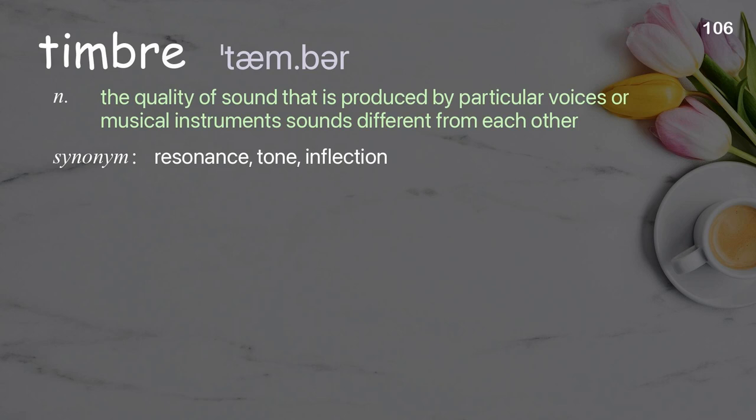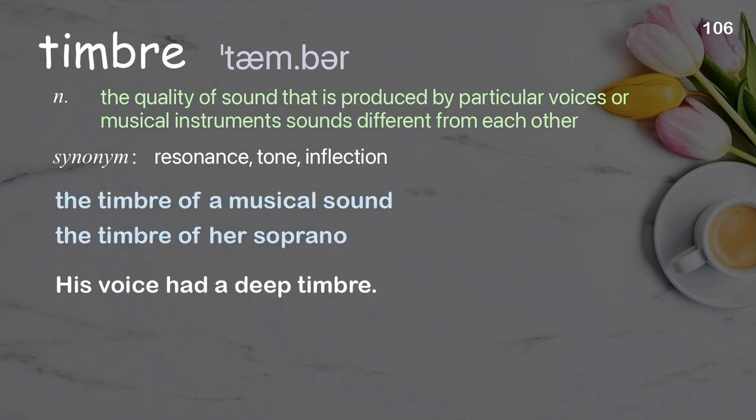Timbre: the quality of sound that is produced by particular voices or musical instruments that makes them sound different from each other. Examples: the timbre of a musical sound, the timbre of her soprano. His voice had a deep timbre.